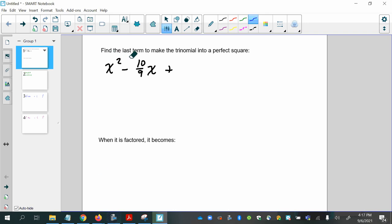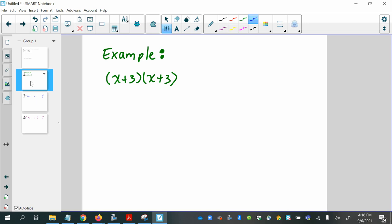In this example, we're asked to find the last term to make the trinomial into a perfect square.